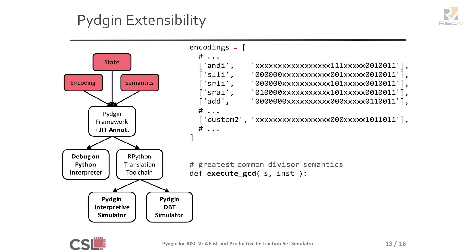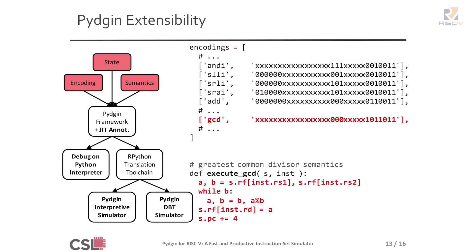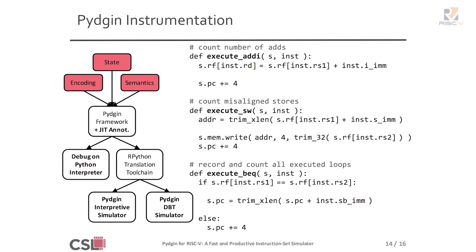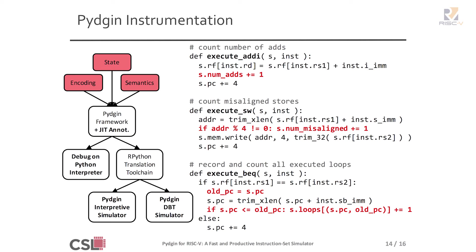Let's talk about extensibility in the Pigeon framework. One of the simplest ways to extend instruction support is to override the custom primary opcode. For example, custom opcode 2 might be overridden to map to a new instruction — let's call it GCD for greatest common divisor — implemented in just five lines of Python code. For instrumentation, if you want to count how many ADDI instructions are in your program, you just add a new field to your state and increment it in the execute function. Counting misaligned stores is a single-liner. Recording and counting all executed loops is just two lines of Python.